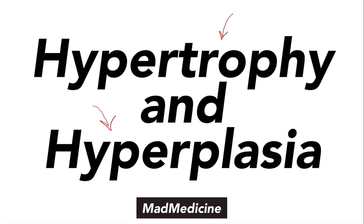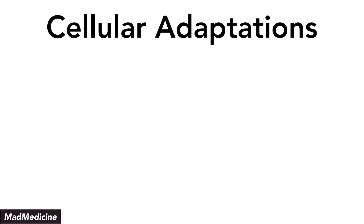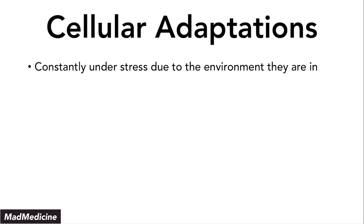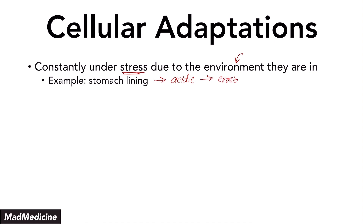Let's dive right in by first discussing cellular adaptations. The thing you've got to remember about your cells is that your cells are constantly under a lot of stress, mainly because of the environment that they are in. One example of this would be your stomach lining. Your stomach lining is in a very toxic, very acidic environment, and because of that, it is at risk of erosion. But our stomach lining has developed cellular adaptations in order to prevent this from happening.